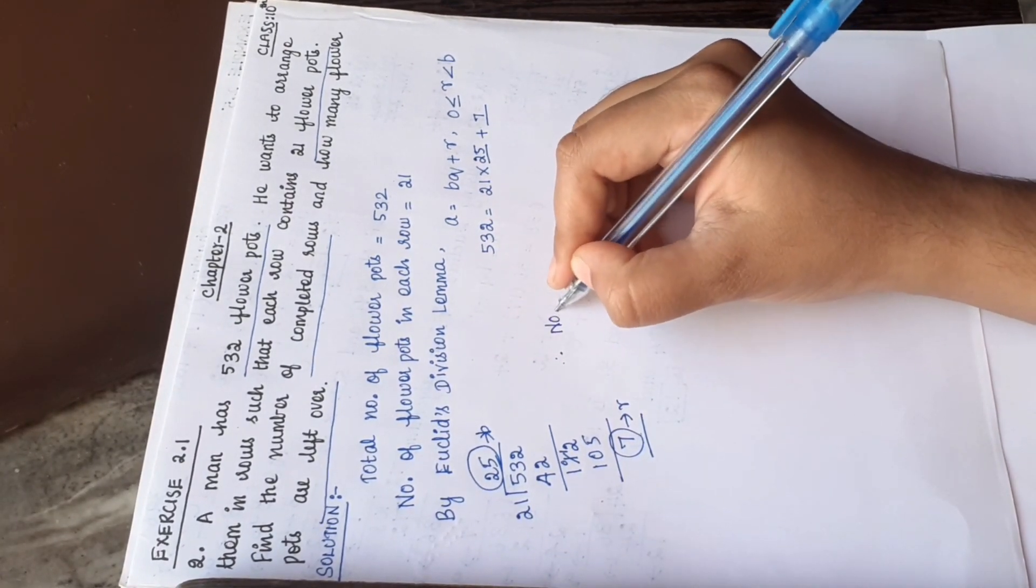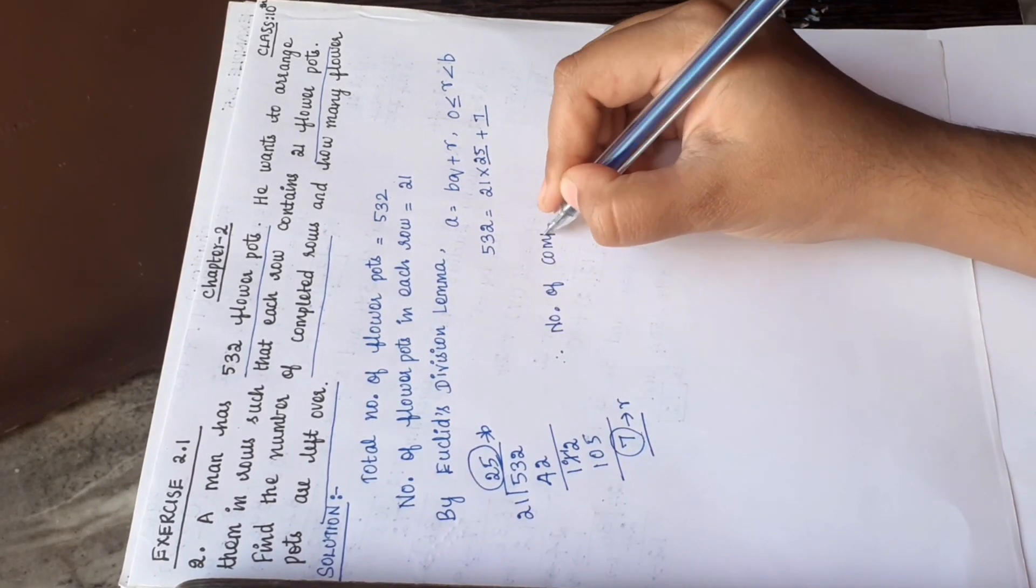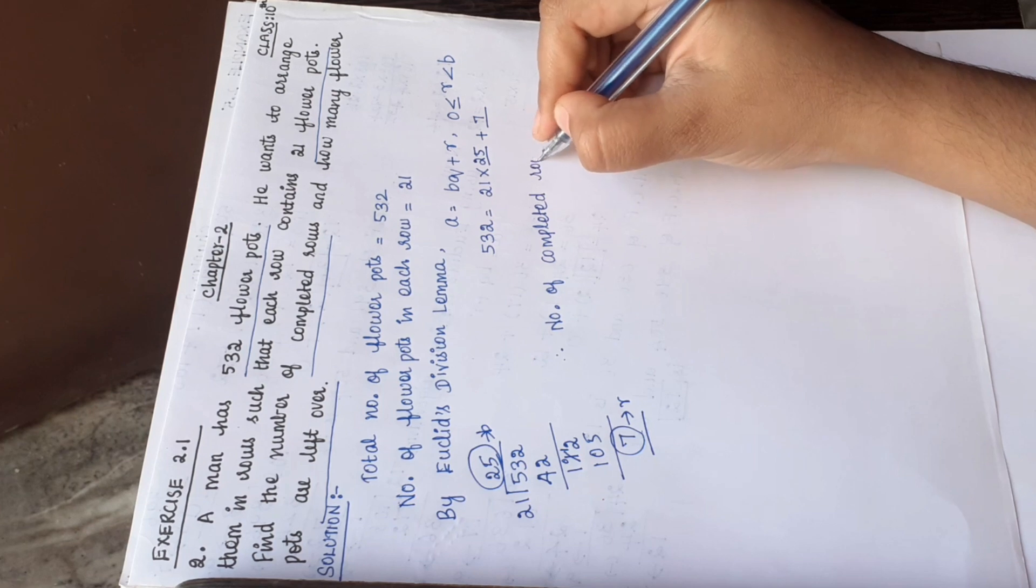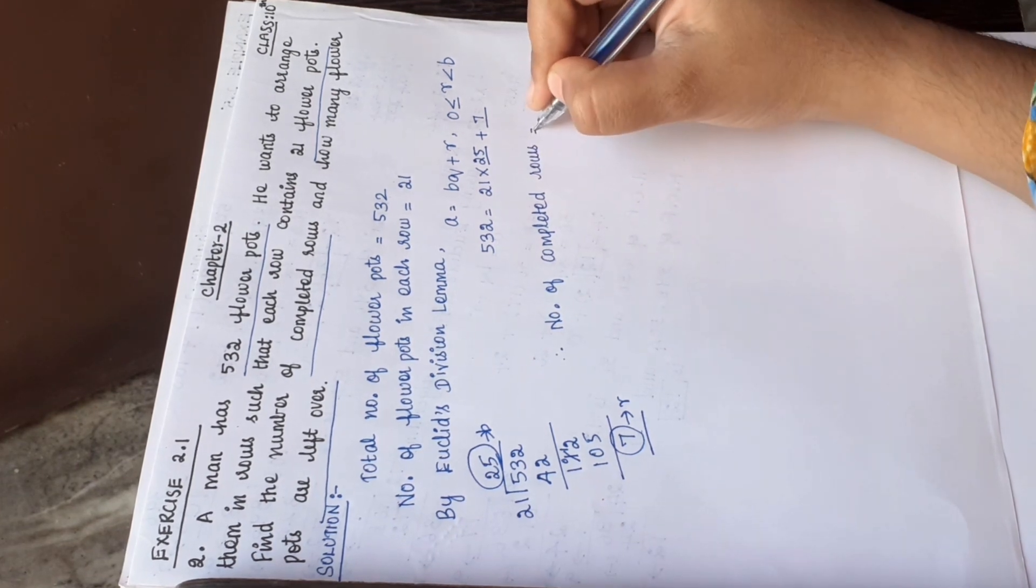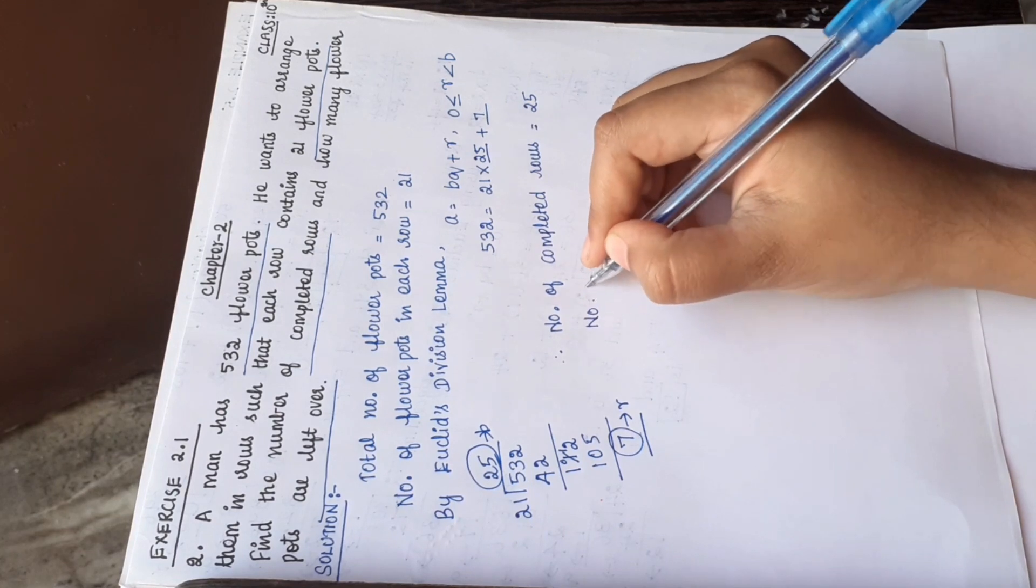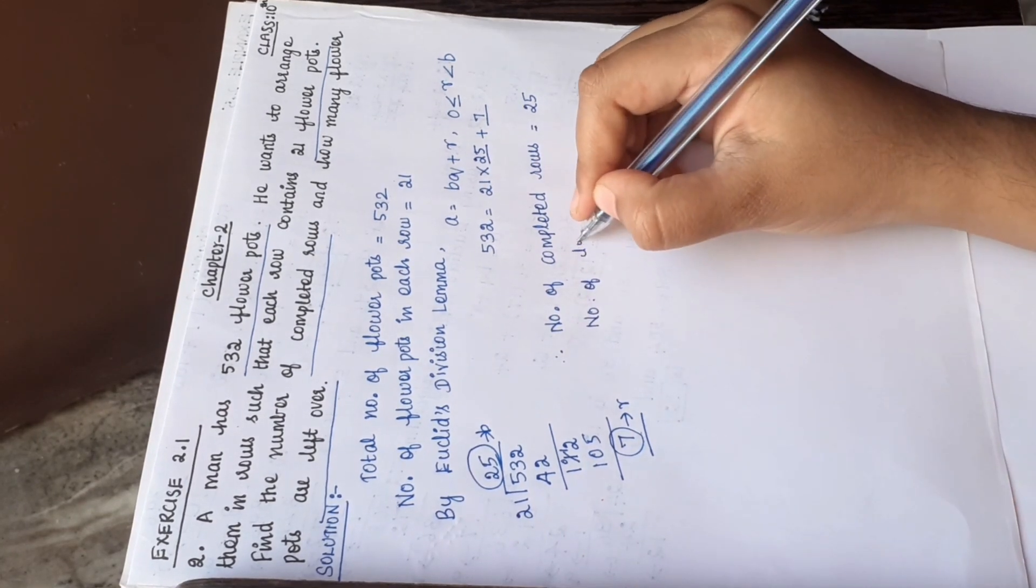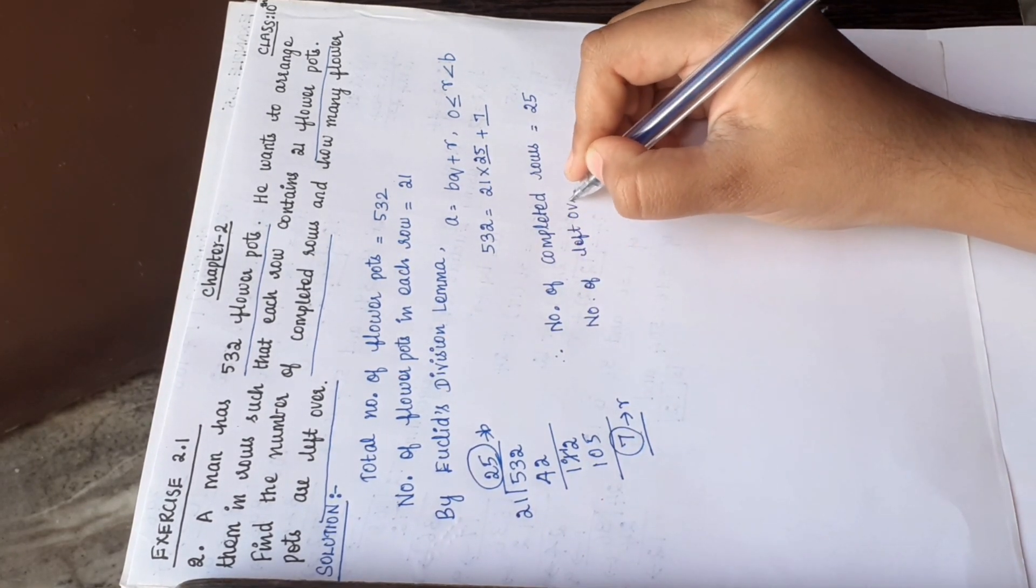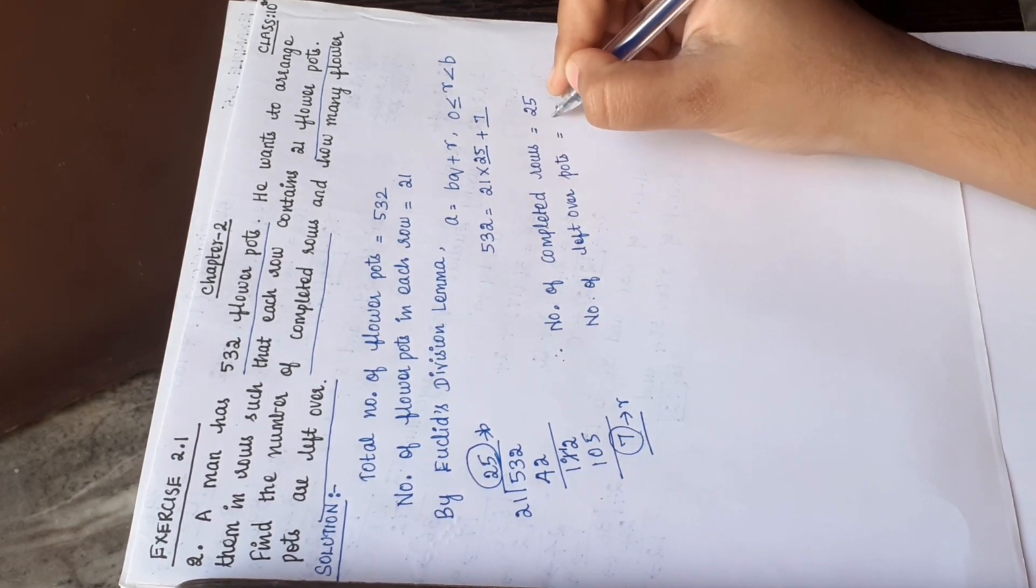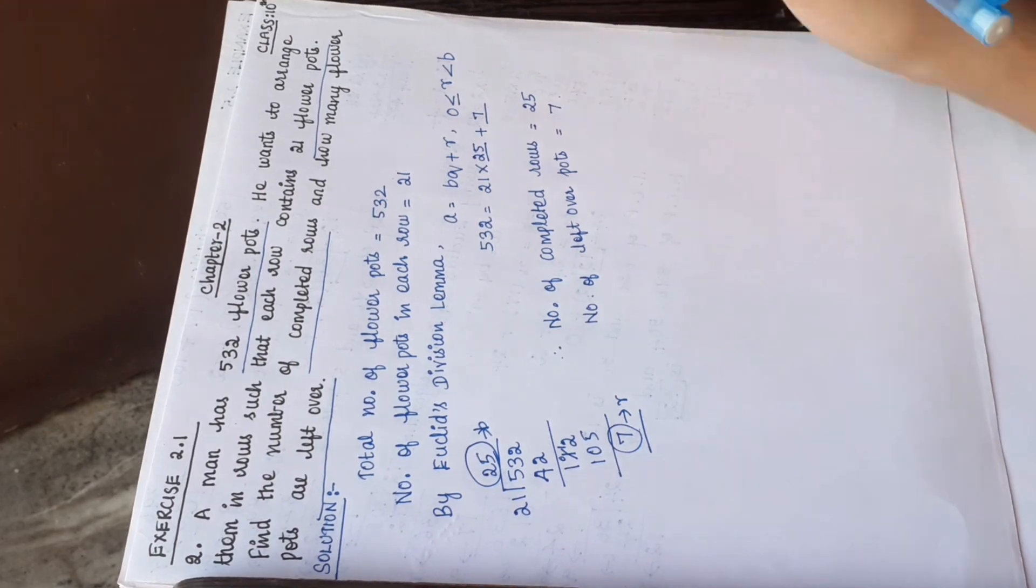number of completed rows 25 and number of leftover flowerpots 7. So this is the answer.